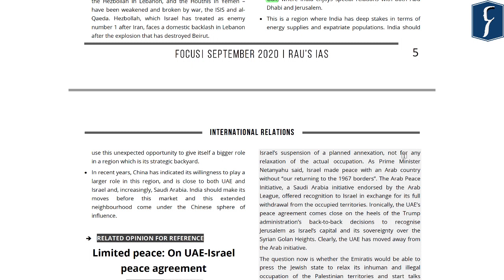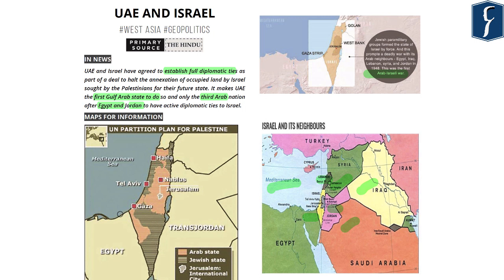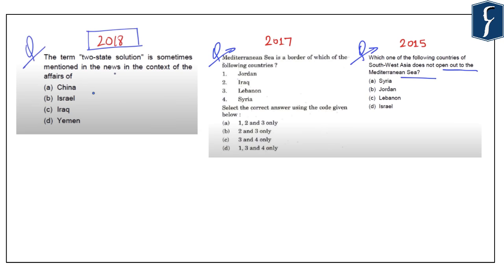In this article, we have seen the basic aspects of the UAE-Israel peace agreement or the Abraham Accords, past efforts to bring peace between Arab countries and Israel, the probable reasons for signing such an agreement, and the diplomatic implications for the Middle Eastern region, as well as India's stand. From this topic of the Israel-Palestine issue and the geopolitics of the Middle Eastern region, three questions have been asked in the preliminary examination in the years 2018, 2017, and 2015.